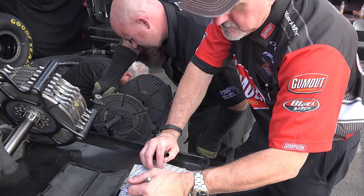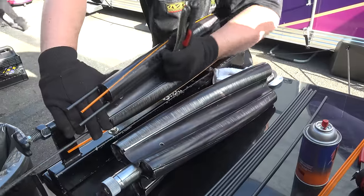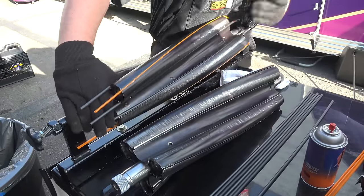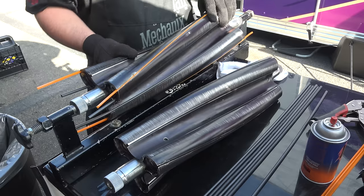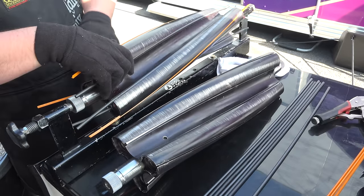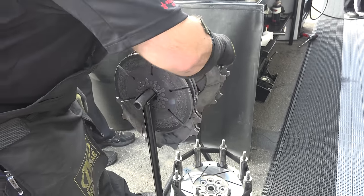The clutch is replaced after every run and it does occasionally weld together when it does lock up. The supercharger is freshened after every four runs, but it can potentially last for many runs and is the longest lasting rotating component of the engine. The discarded parts are either scrapped or given to fans as souvenirs.